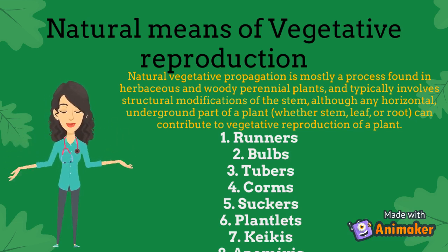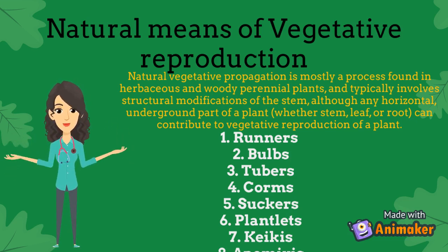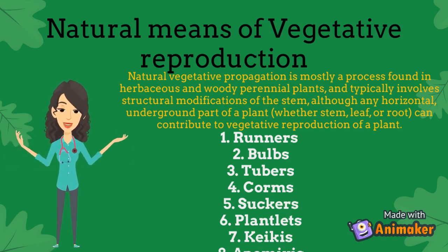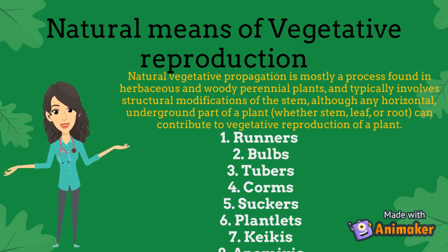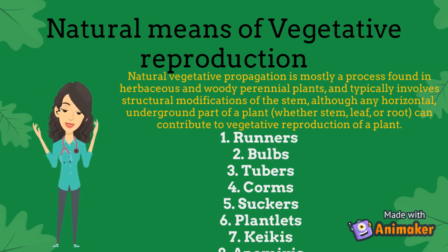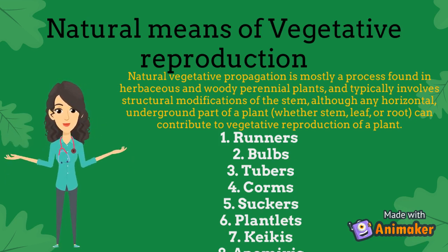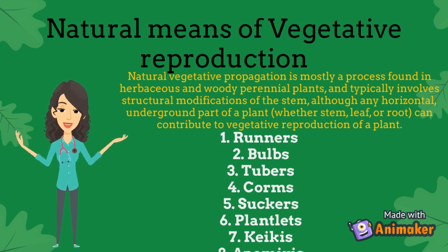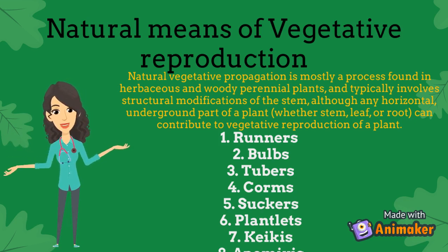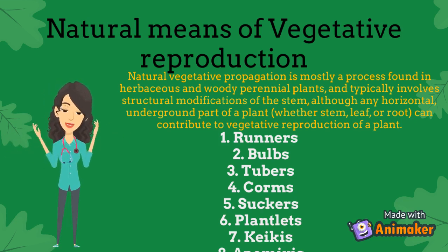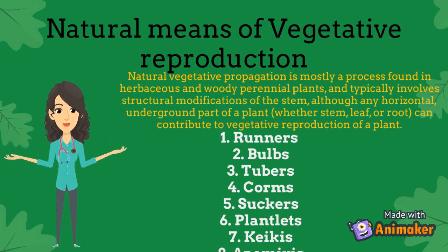Bulbs are inflated parts of the stem within which lie the central shoots of new plants. They are typically underground and are surrounded by plump and layered leaves that provide nutrients to the new plant. Examples of plants that use bulbs are shallots, lilies, and tulips.